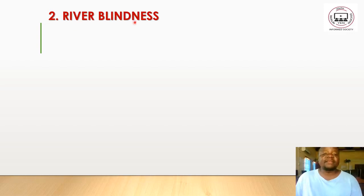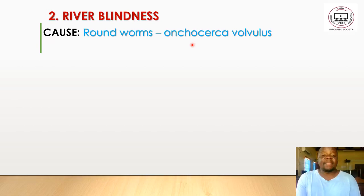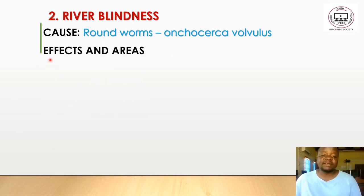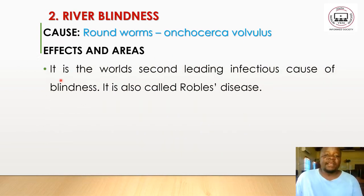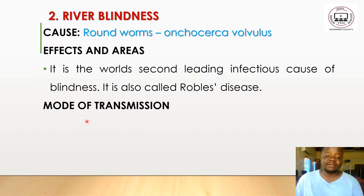River blindness is caused by the roundworm Onchocerca volvulus. It is the world's second leading infectious cause of blindness, also called river disease. The areas affected are the eyes — the sense organs for sight.